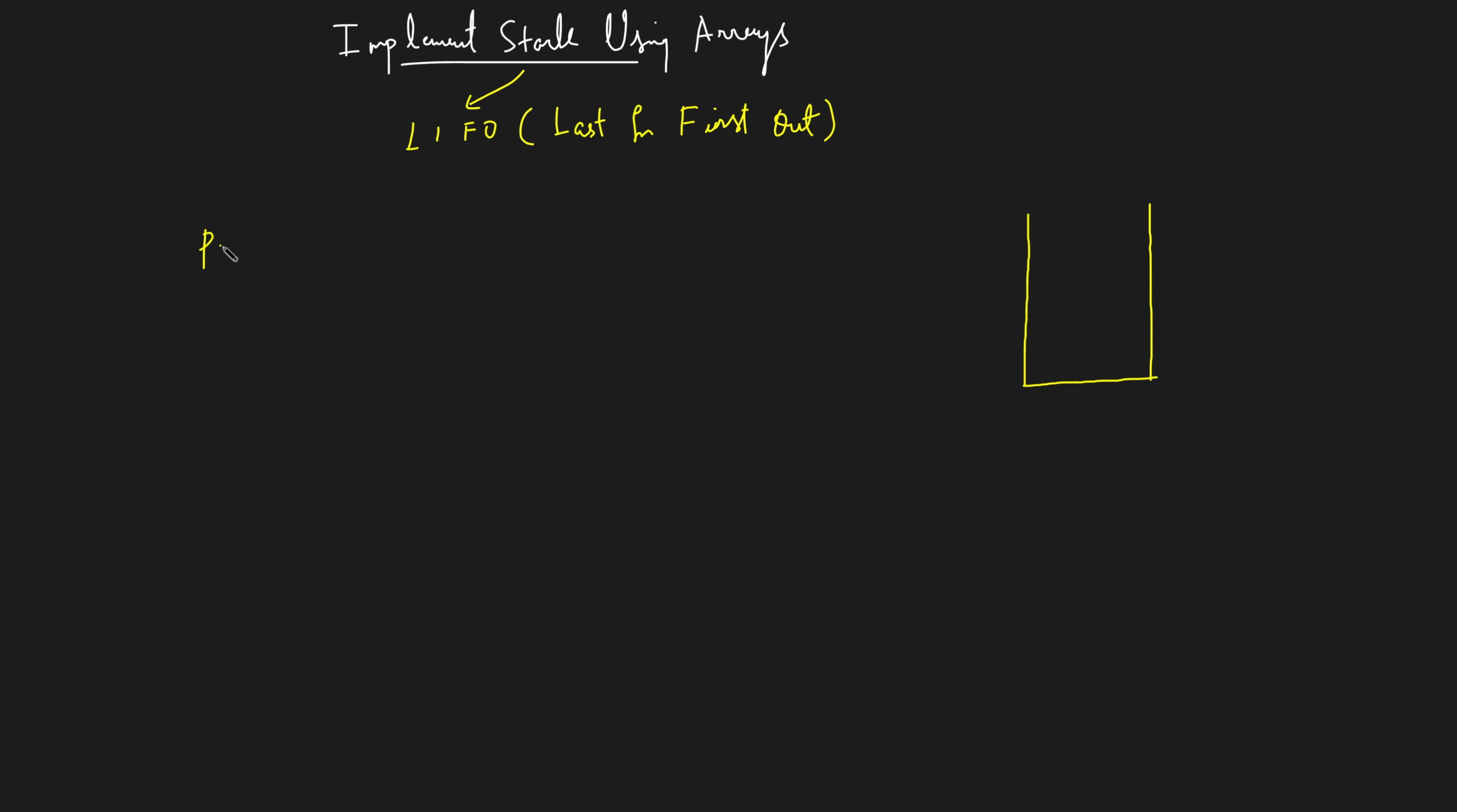Let's assume it has one operation as push. It says that push 6 into it. So what you do is you take this 6 and you put it into this your stack data structure. Now again just imagine someone says push 3, so again you take this 3 and you put that into your data structure.